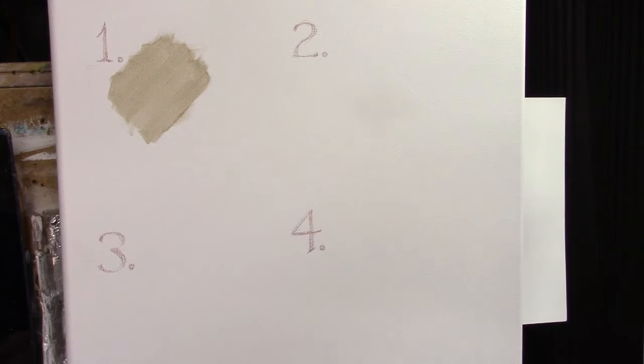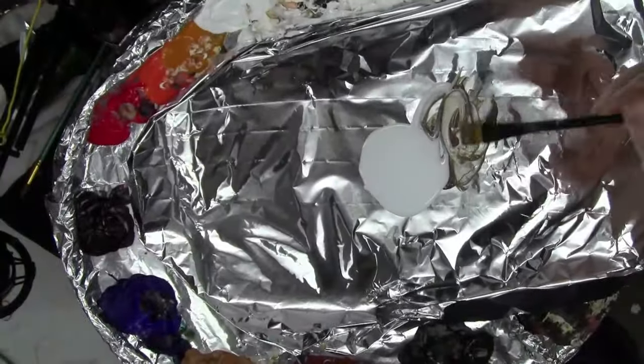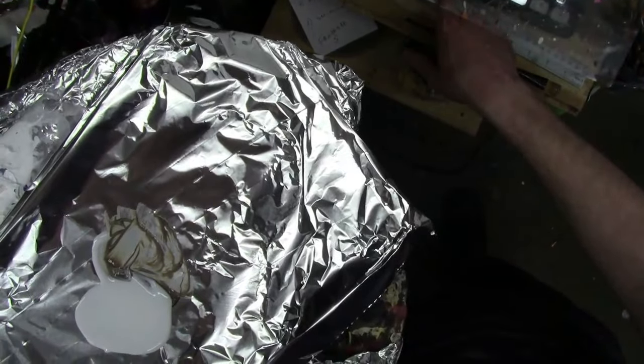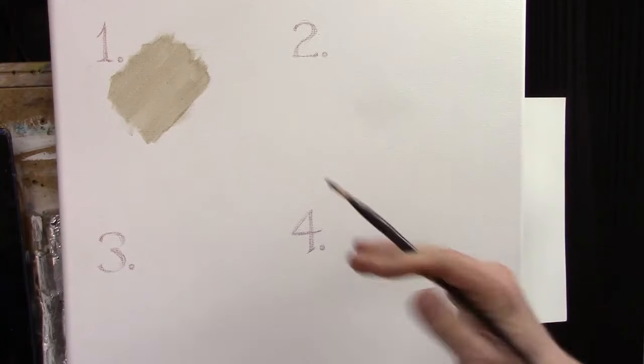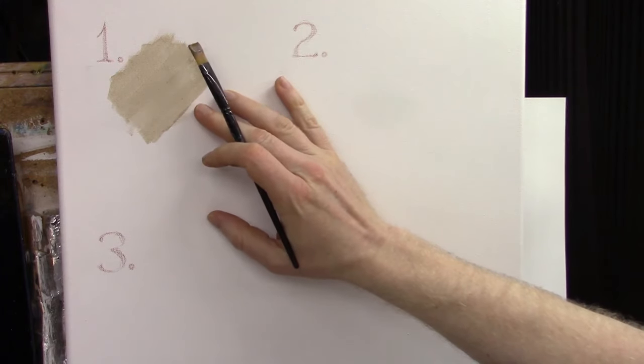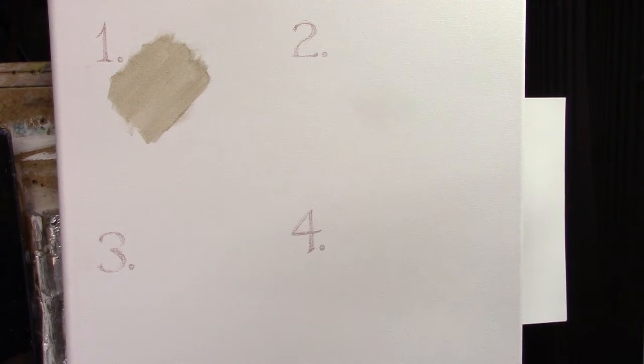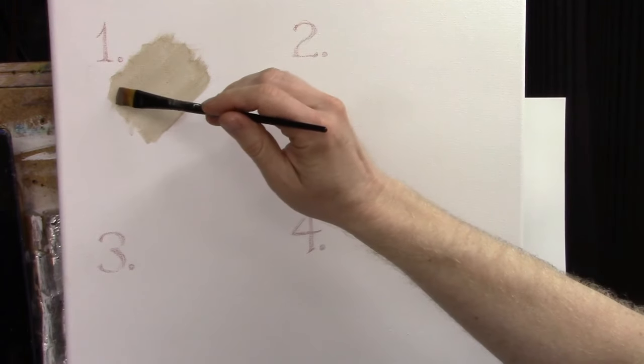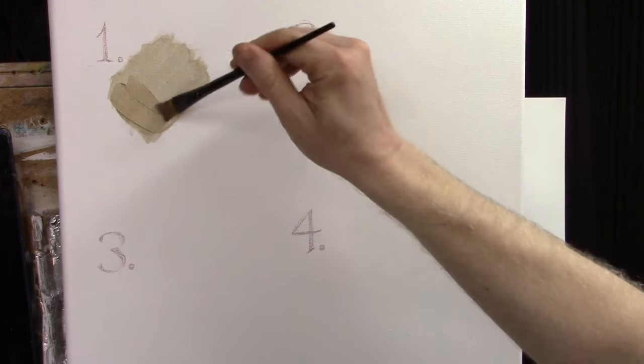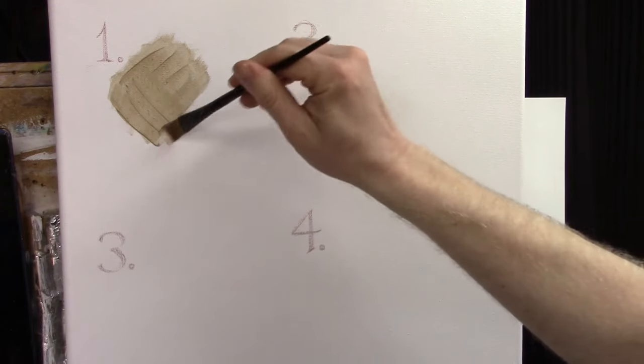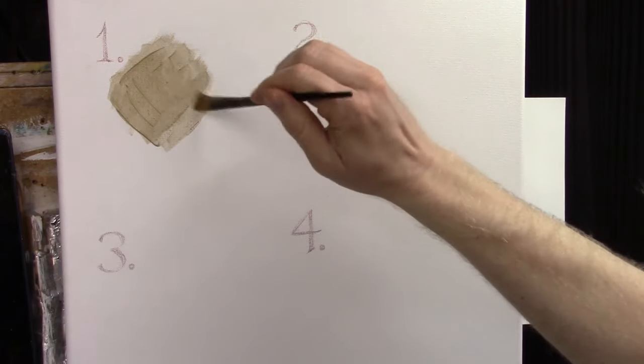So I'm going to let this dry and then I'm going to go ahead and follow up with another layer and you'll be able to see the difference. All right. Now it's completely dried and we're going to follow up with another layer right on top. And then I'll be able to demonstrate how this works. So same kind of glaze that you're going to want to get onto your brush. And then we're going to go ahead and reapply that.